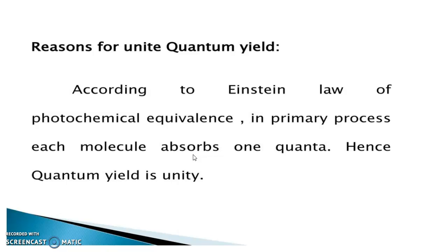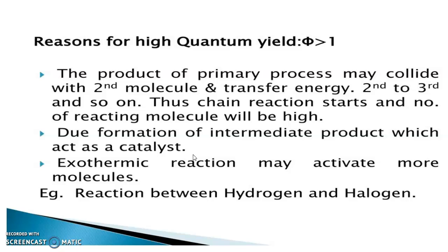Sometimes we will get a high quantum yield or a low quantum yield. The reason for high quantum yield is, the product of primary process may collide with the second molecule and transfer the energy. Like that, that second molecule will collide with third molecule and transfer the energy and so on. Thus, the chain reaction is started and the number of reacting molecules will be increased.